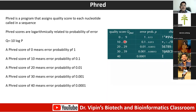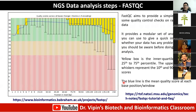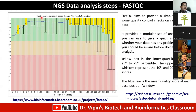We usually have a range of 0 to 44 Phred quality scores. Anything above 20 is acceptable; anything below 20 is not acceptable. The first thing you do once you get your data is quality control, and the most common algorithm for quality control is FastQC. The first graph FastQC gives you is the quality scores across all bases.